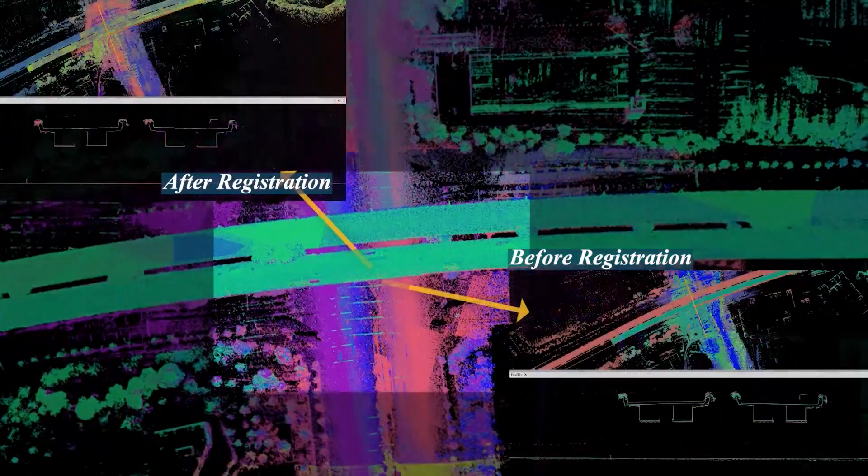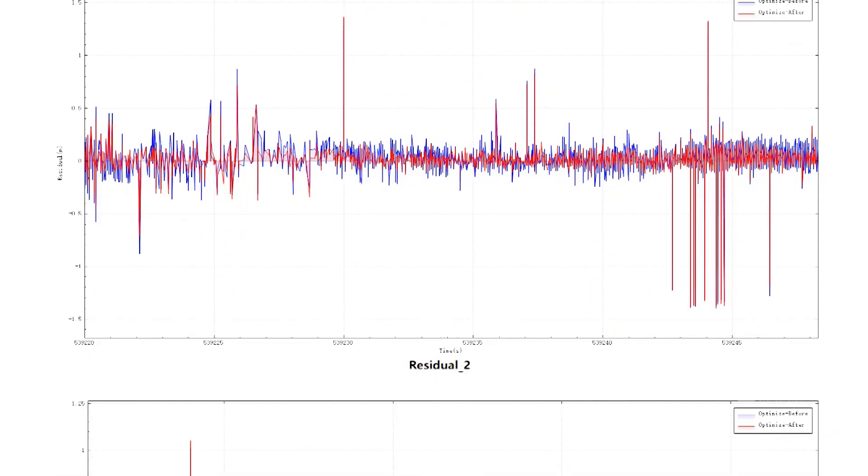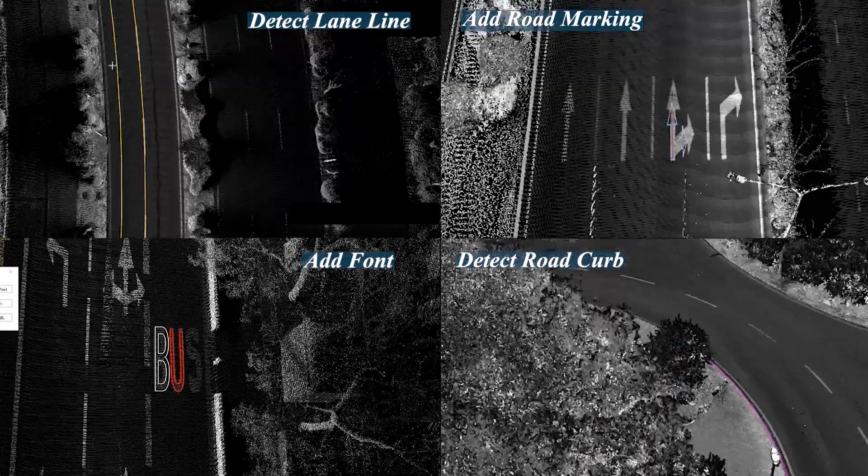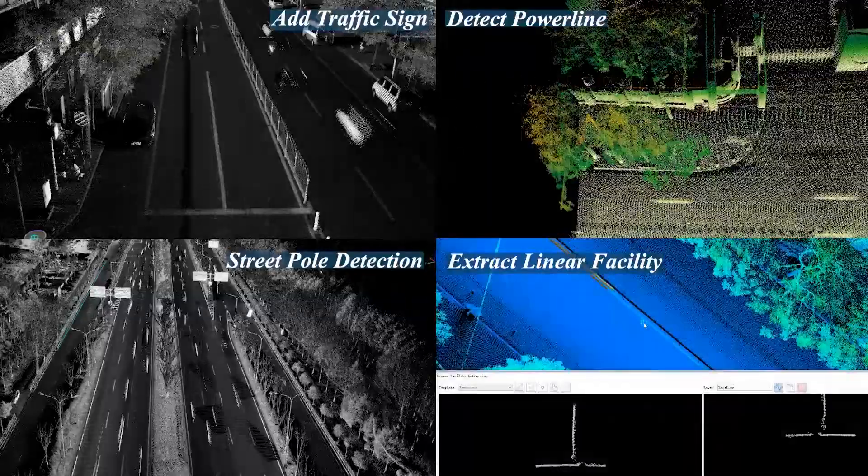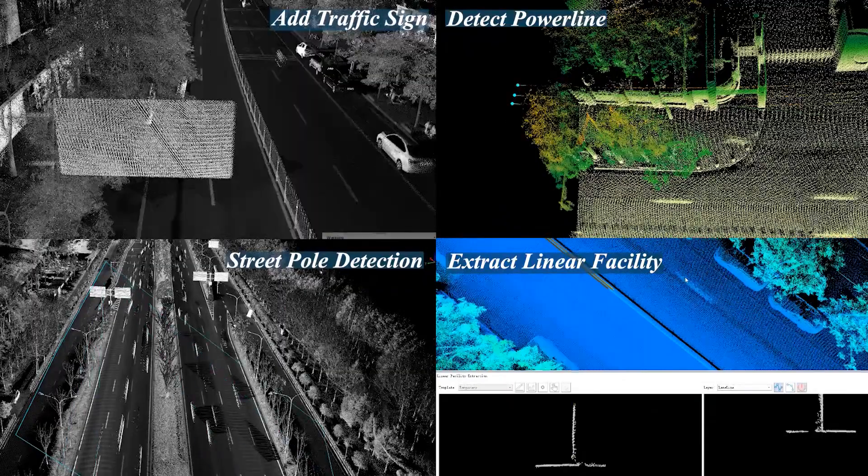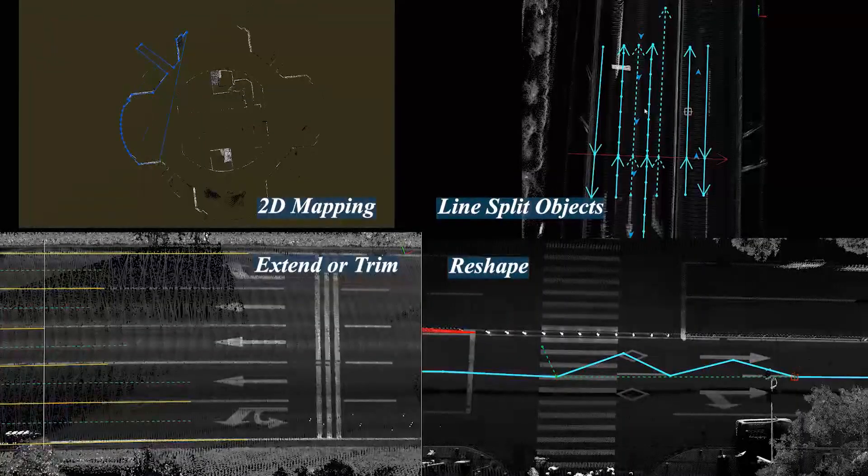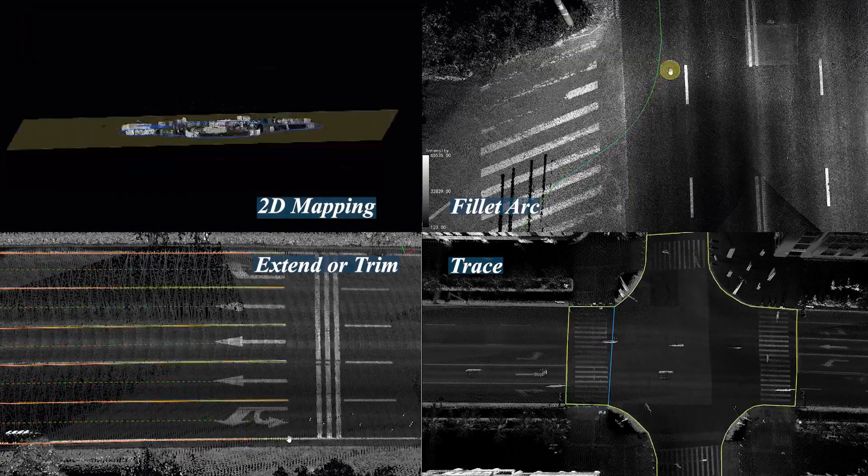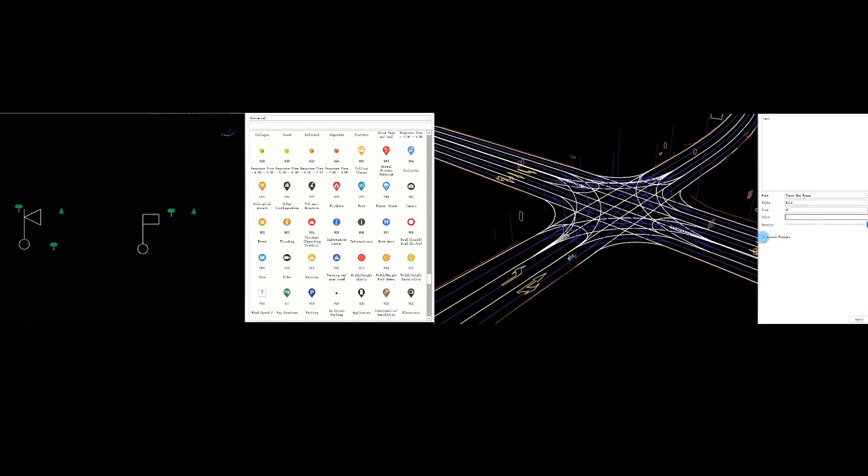Pre-processing supports the improvement of point cloud data quality and outputs detailed accuracy reports. Feature extraction provides automatic extraction tools for all types of road elements and facilities. Vector editing provides more than 50 editing tools to meet the drawing needs of multiple industries.